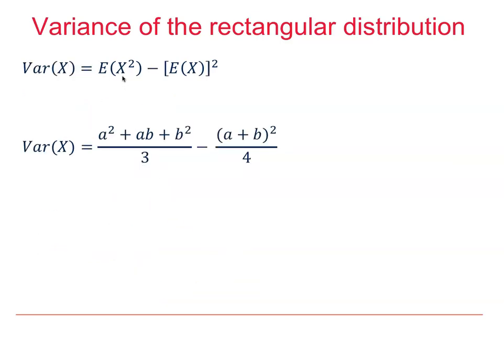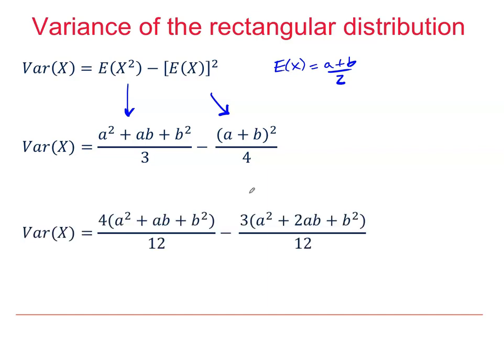On the left here we have the expression we just derived for the expected value of x squared, and of course the expected value of x was the midpoint between A and B. So if we square that, we finish up with this second term here. Please pause the video to simplify by bringing to a common denominator of 12. So to get the common denominator of 12, we need to multiply the left hand fraction by 4 and the right hand fraction by 3. Please pause again to simplify.